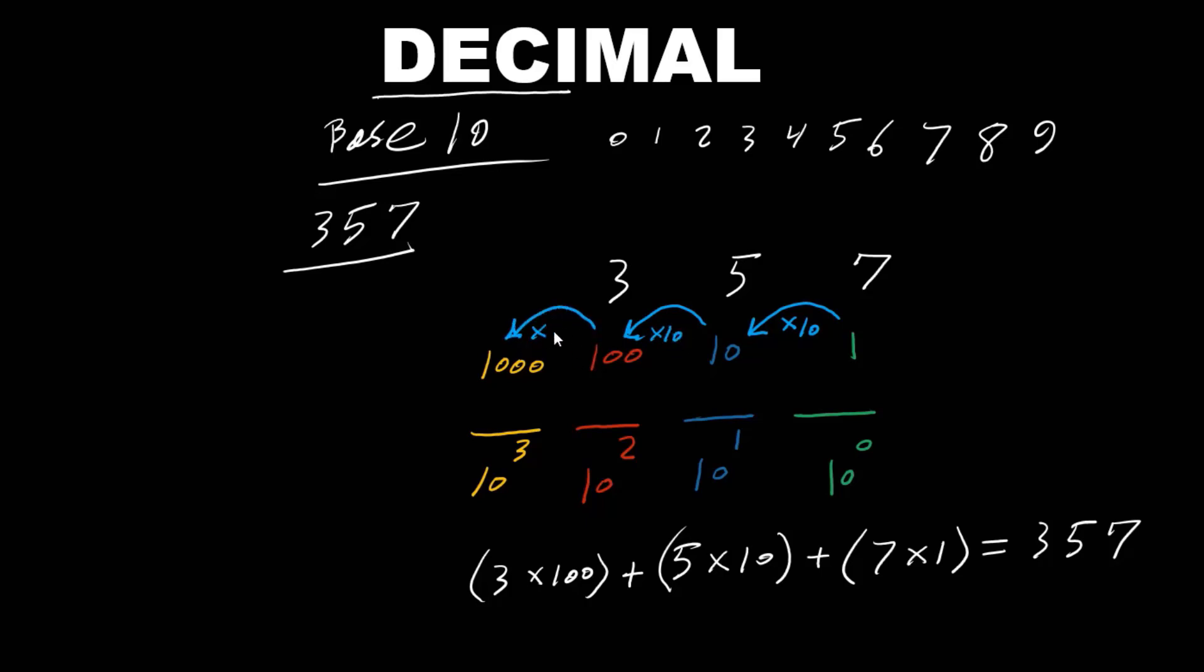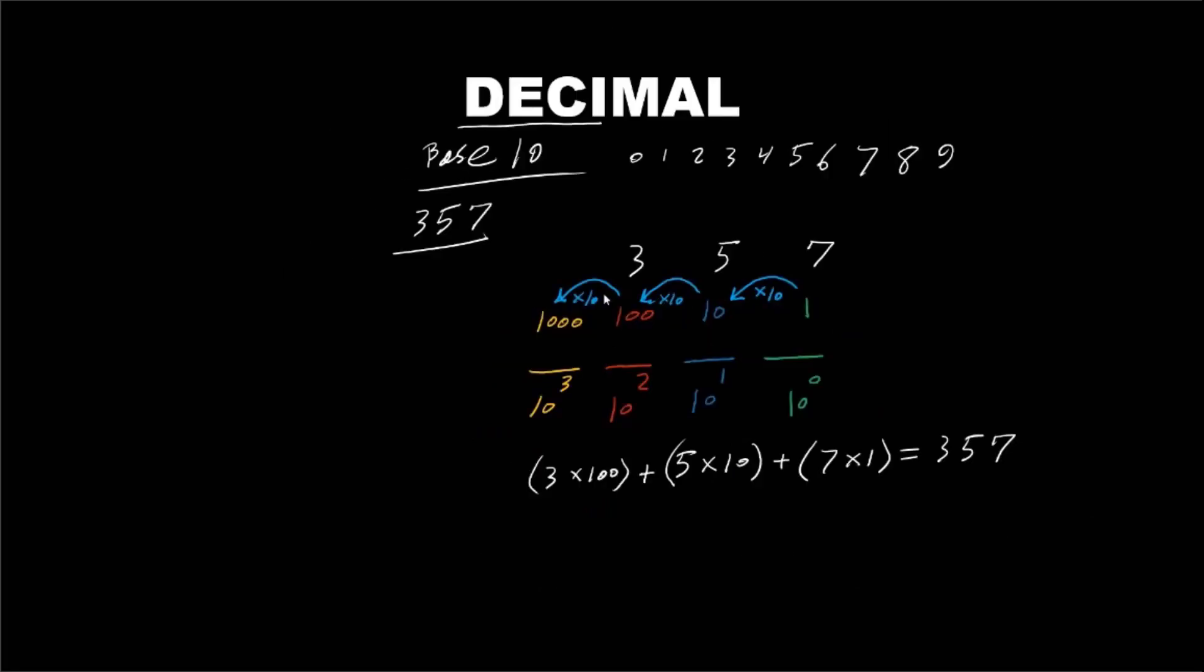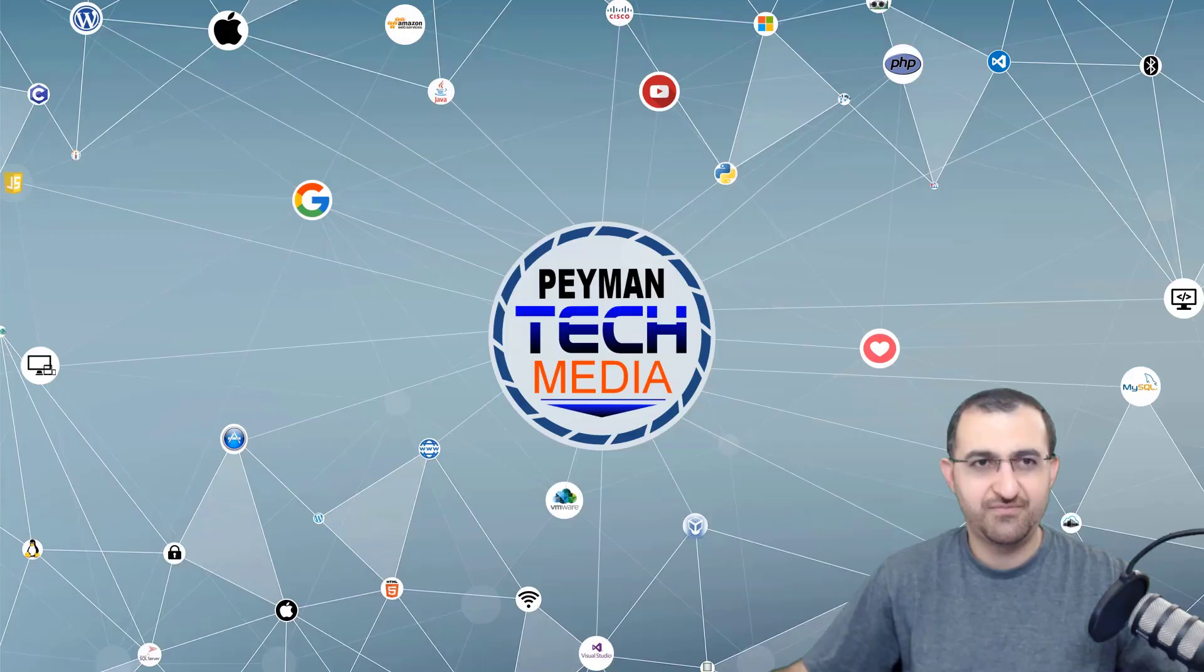is 1000, because decimal is a base-10 system. Well, this was a quick overview of the decimal system. Thank you so much for watching. If you have any questions, please leave them in the comment section. If you liked the video, please hit the like button, and if you haven't subscribed to our channel, please subscribe. Thank you so much, have a good day.